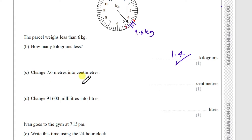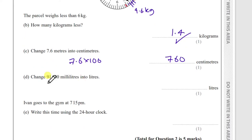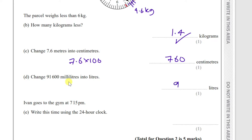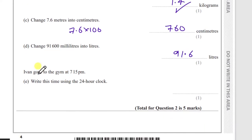Part (c): change 7.6 meters into centimeters. To go from meters to centimeters, multiply by 100. So 7.6 × 100 = 760 cm. Part (d): change 91,600 milliliters into liters. There are 1,000 milliliters in one liter, so divide by 1,000. 91,600 ÷ 1,000 = 91.6 liters.